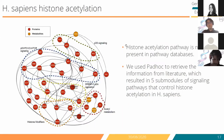We discussed the histone acetylation pathway and its under-representation in pathway databases, even though it is very important for recent research. We created a histone acetylation pathway in Homo sapiens with PADOC, and the result shows five main submodules representing signaling or metabolic pathways such as p38, p53, FoxO1 signaling, cyclin regulation, or acetyl metabolism — which is crucial for the production of acetyl coenzyme A, important for histone acetyltransferase activity.